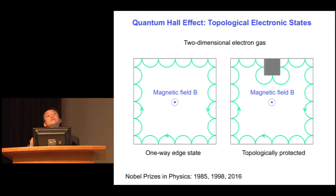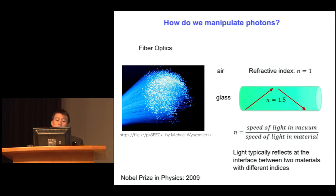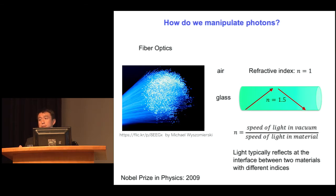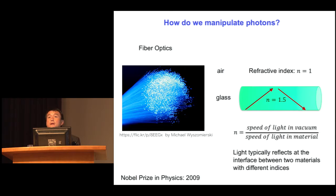Now let me also review how we control light. When we think about controlling light, we tend to think about materials and the distribution of material in space. One very important concept is the refractive index. When light or photons propagate in a material made out of atoms, the presence of those atoms has the effect of slowing down the propagation of light. The slowdown factor is what is defined as the refractive index, which measures the ratio of the speed of light in vacuum to the speed of light in the material. A glass, for example, will have a refractive index of 1.5.